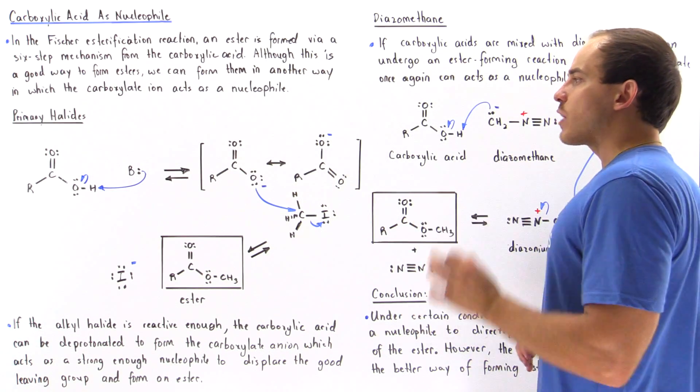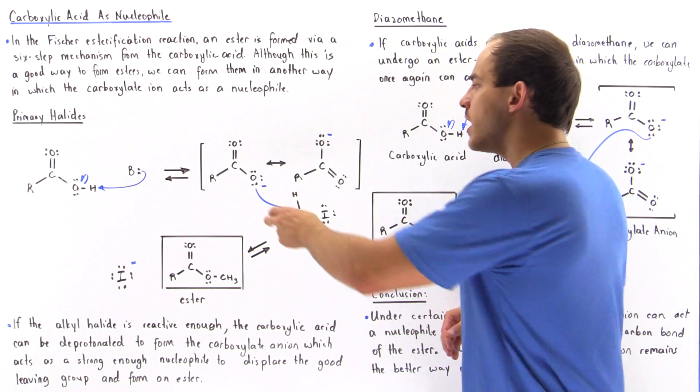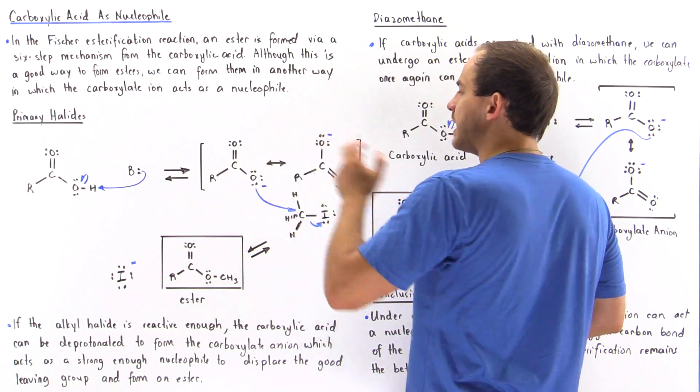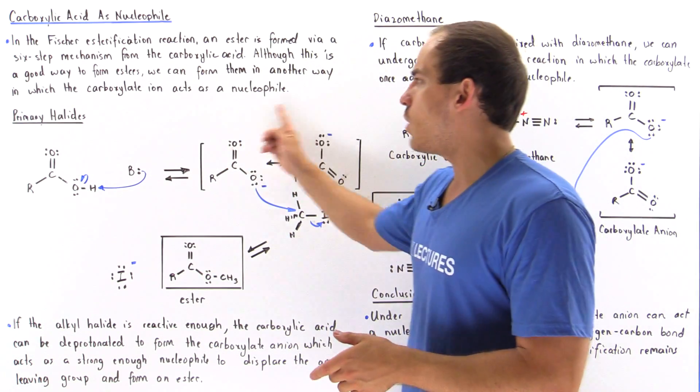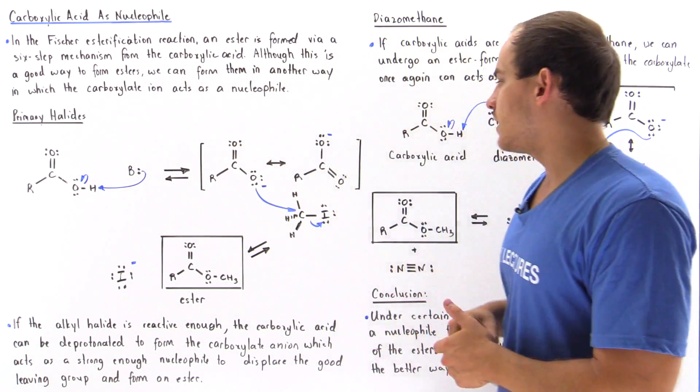That is resonance stabilized. We have the delocalization of negative charge among these two oxygen atoms. This is known as the carboxylate ion.